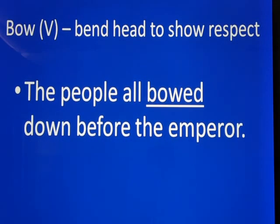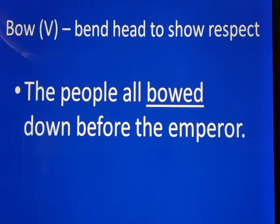Next word: Bow — B-O-W. What's the meaning? Bent head to show respect. Who bowed his head? Mushtaqa bowed his head. The people all bowed down before the emperor. Why did they do that? Because they wanted to show their respect. Bow — bent head to show respect. Sentence: The people all bow down before the emperor.